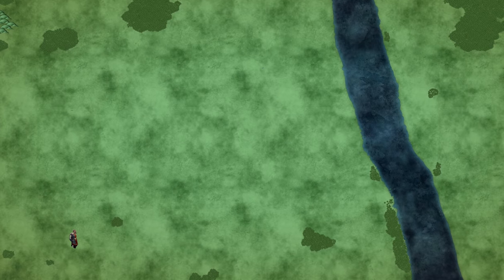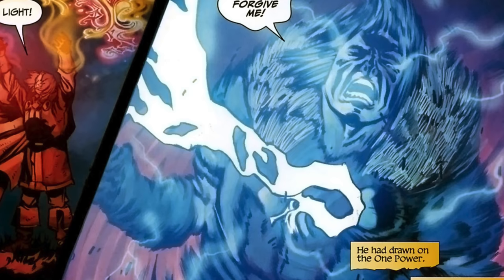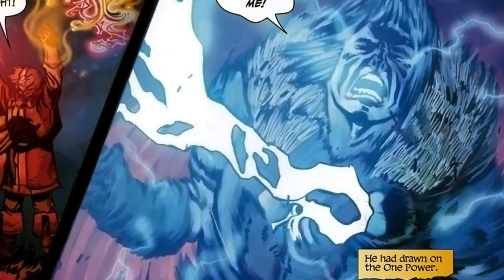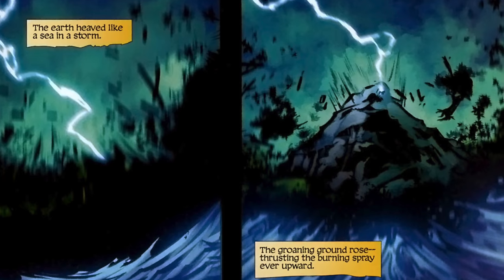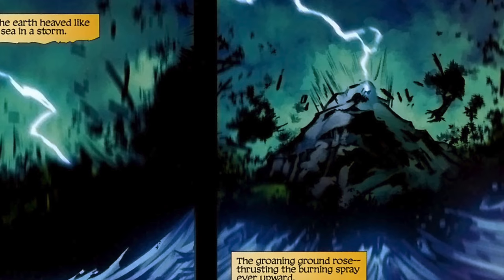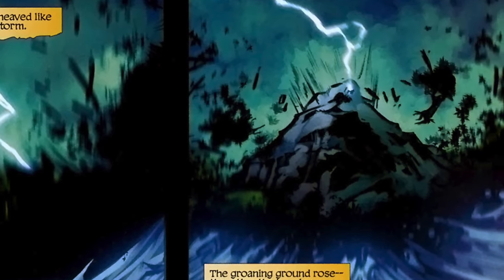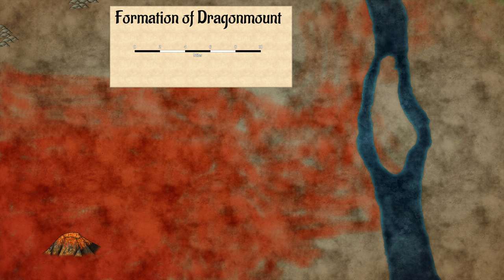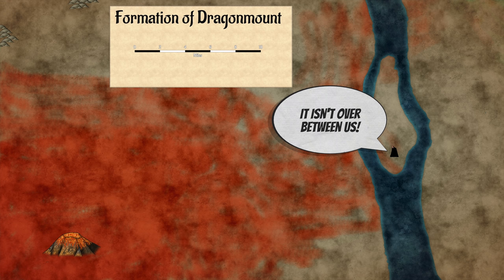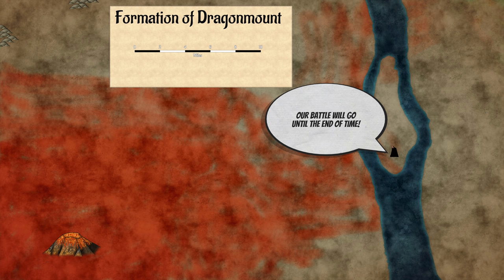Lews Therin uses the True Source — the magic of this world — to transport himself to a remote area devoid of habitation. He finds himself on flat land with a large river nearby. Giving in to his grief and guilt, he draws so much of the One Power that he destroys himself by channeling a great amount of it into the earth. A large volcanic mountain forms in that flat plain — miles high — reshaping the area, pushing a curve into the previously straight river and forming a long island in the middle of that river. Afterward, the black-clad man appears on the island, his face showing rage and contempt. He vows their battle will not be done until the end of time, then vanishes.